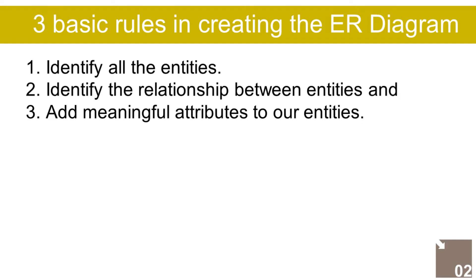This is the first phase of the development of the Capstone Project Monitoring System, which will eventually be used as the basis for the production of the actual database used by the system. We will develop an entity relationship diagram for the CPMS and describe the steps involved in creating the diagram. We will follow the three basic rules in creating the ER diagram: 1. Identify all the entities. 2. Identify the relationship between entities. 3. Add meaningful attributes to our entities.